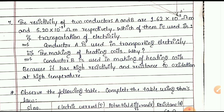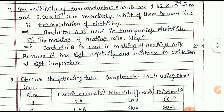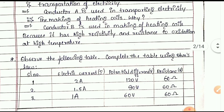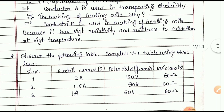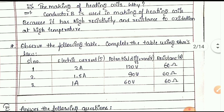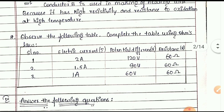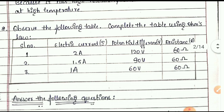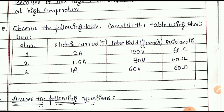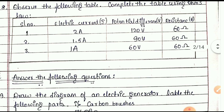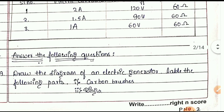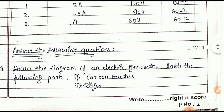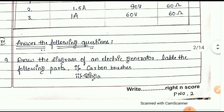The next two-mark question: observe the following table and complete it using Ohm's law. Serial numbers one, two, and three are given with electric current, potential difference, and resistance. This type of question is also very important for examinations.